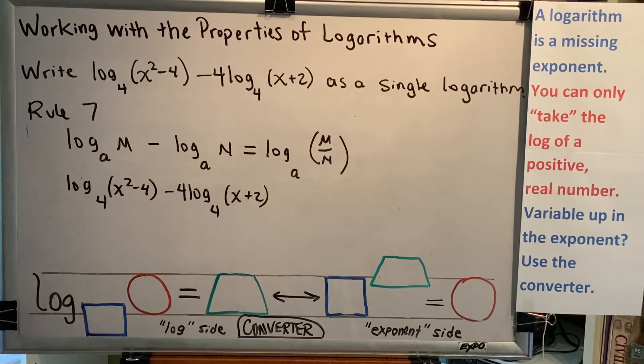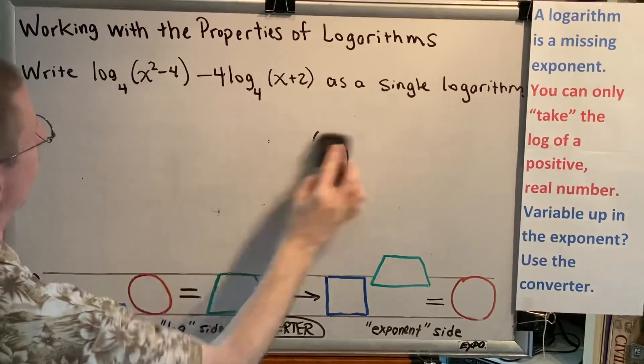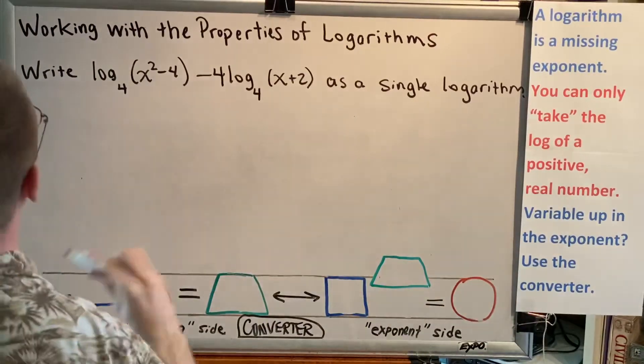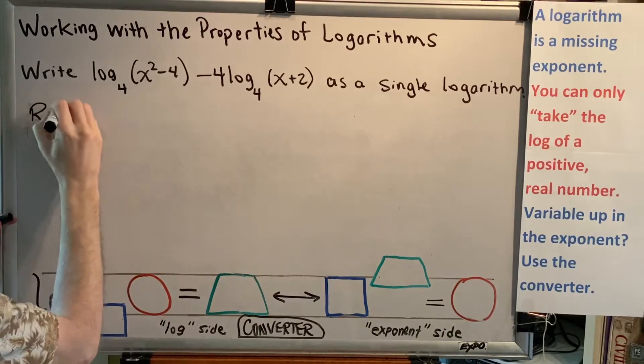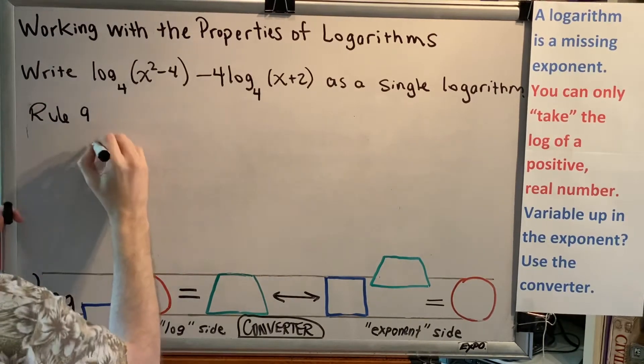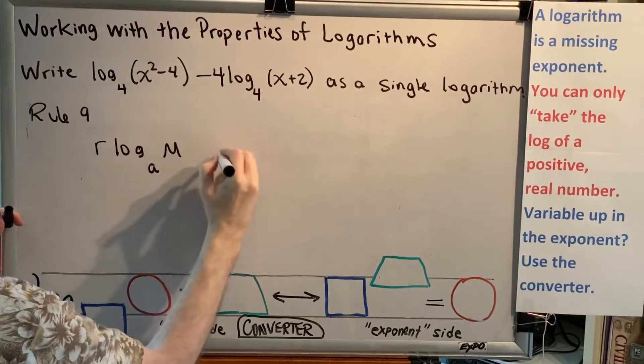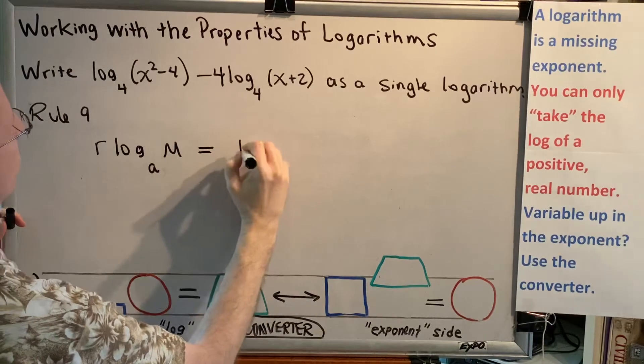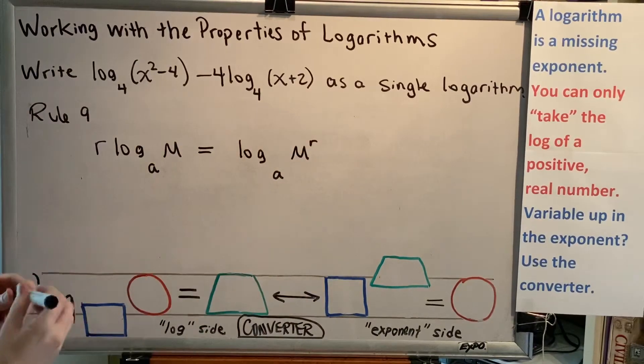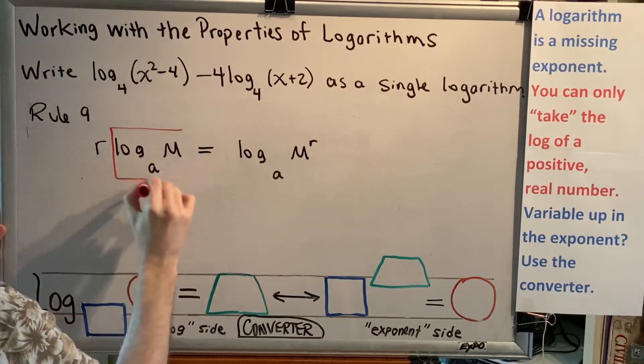So prior to being able to use Rule 7, we need to find a way to get rid of that 4, and we need a rule to do that. That rule is Rule 9. Let's write it down. Rule 9 says r log base a of m is the same thing as log base a of m to the r power.